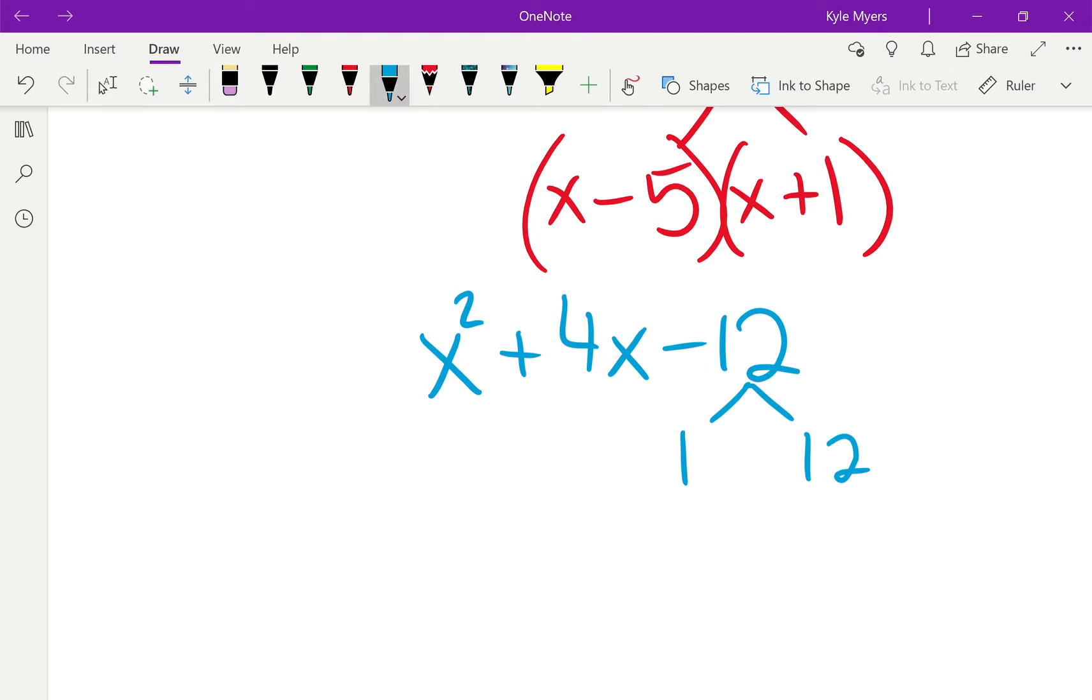But if I want a positive 4, and one of them has to be negative, meaning I'm going to have to subtract, that means I need to make the smaller one the negative one. Otherwise, I get a negative number. Negative 1 times 12, that gives me negative 12.